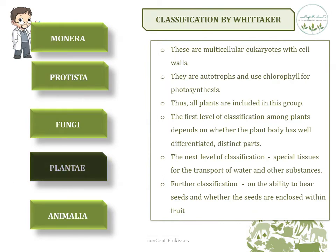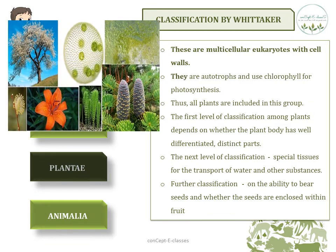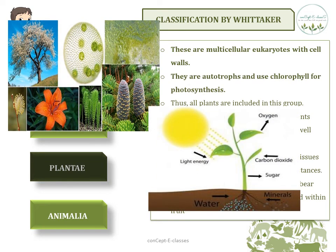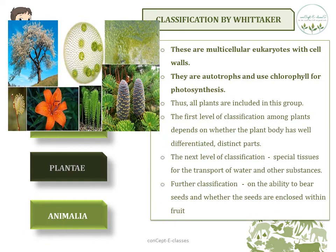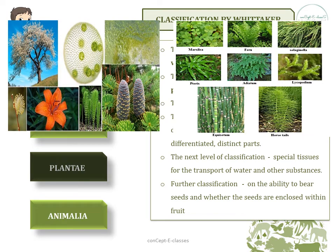The fourth kingdom is Plantae. These are eukaryotic, multicellular organisms with cell walls. Their mode of nutrition is autotrophic — they use chlorophyll for photosynthesis. Thus all plants are included in this group. The kingdom Plantae is further classified based on: whether the plant has differentiated or distinct parts such as stem or leaf; whether it has specialized tissues for the transport of water and other substances; whether it can bear seeds; and whether those seeds are enclosed within fruits.